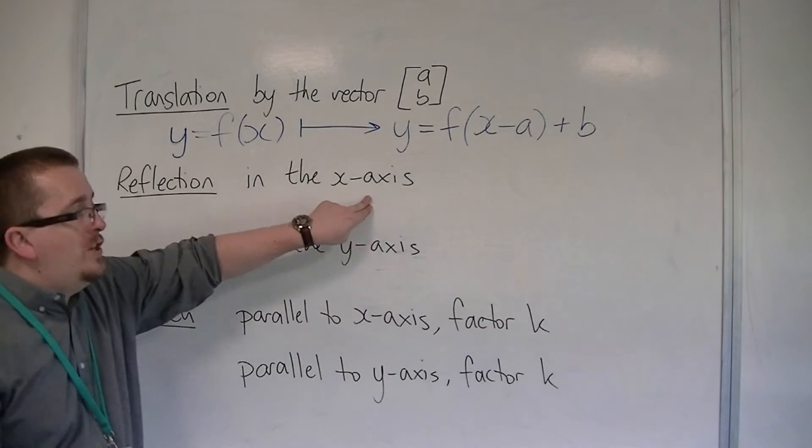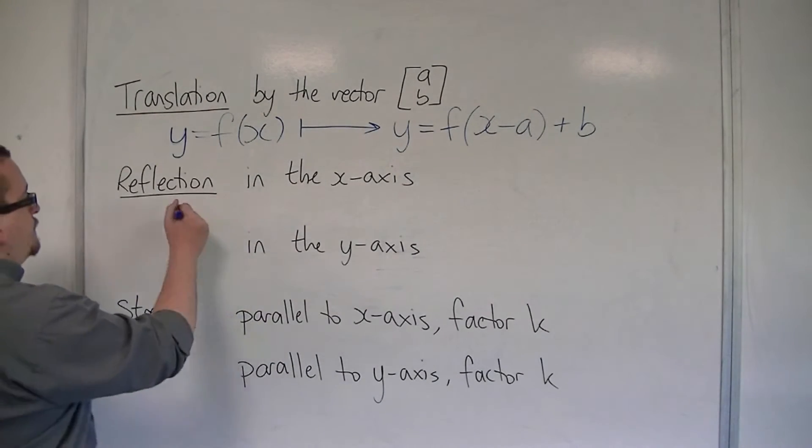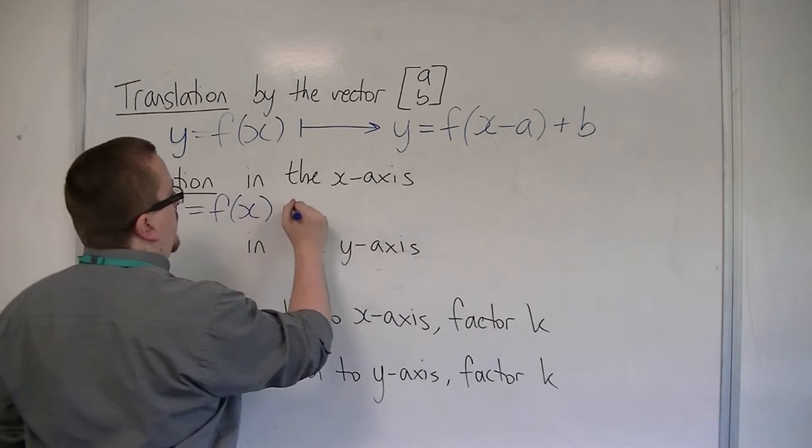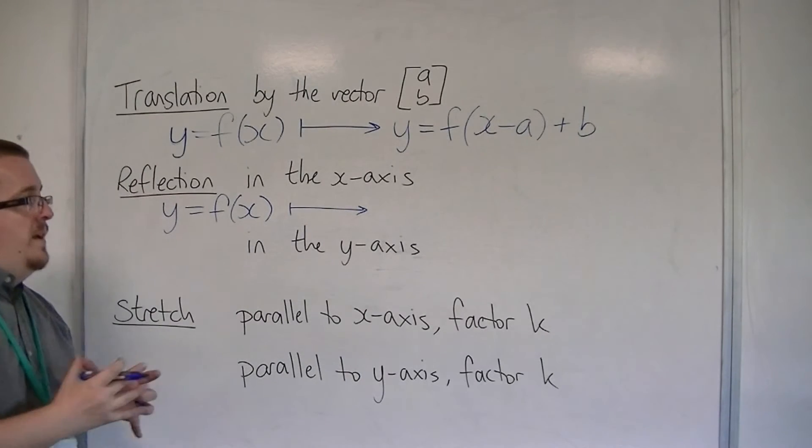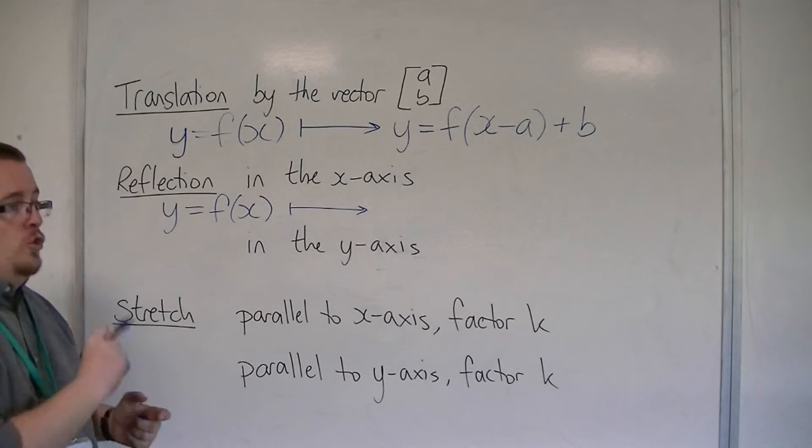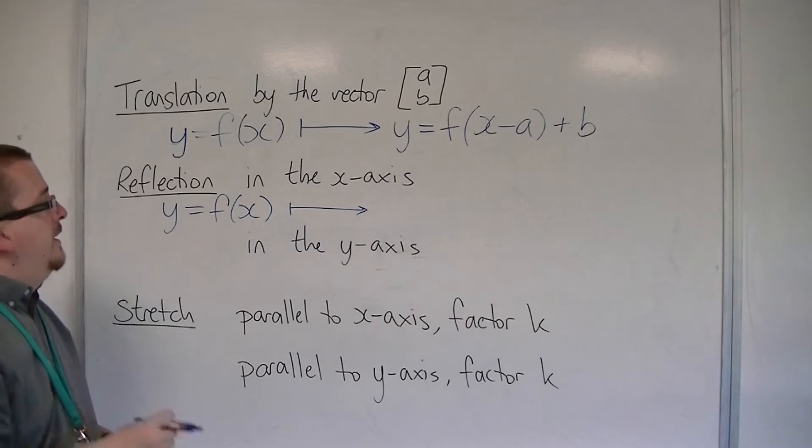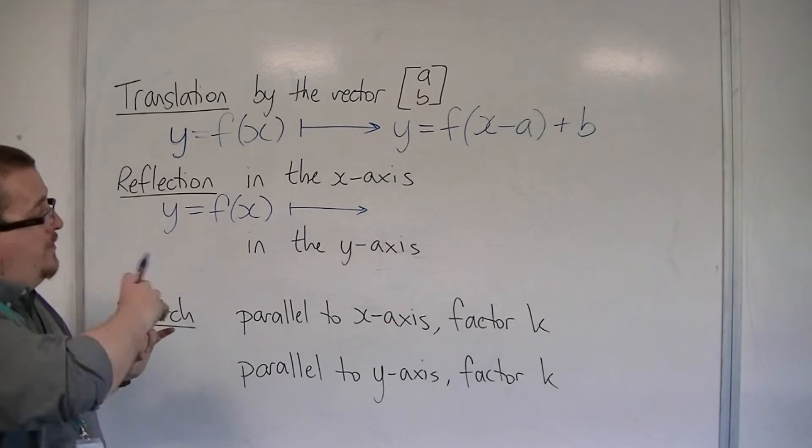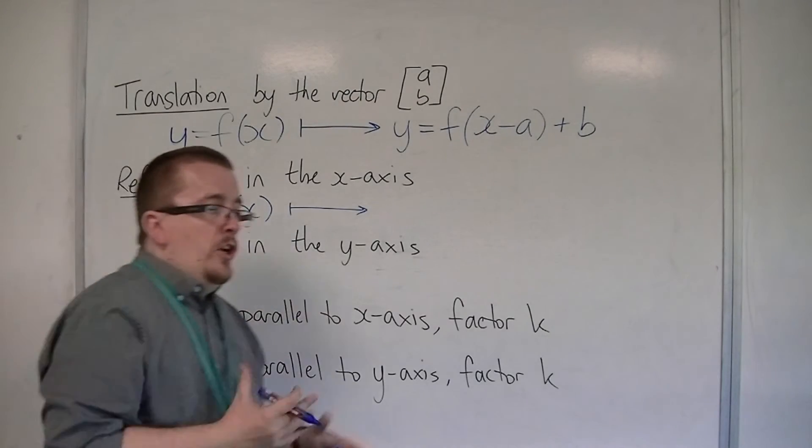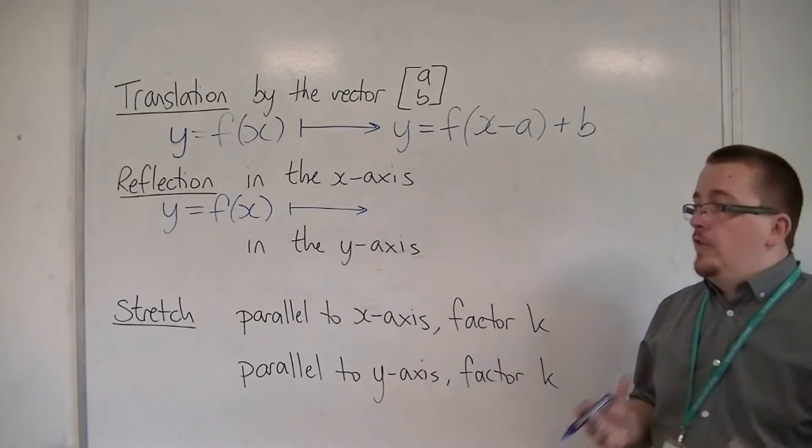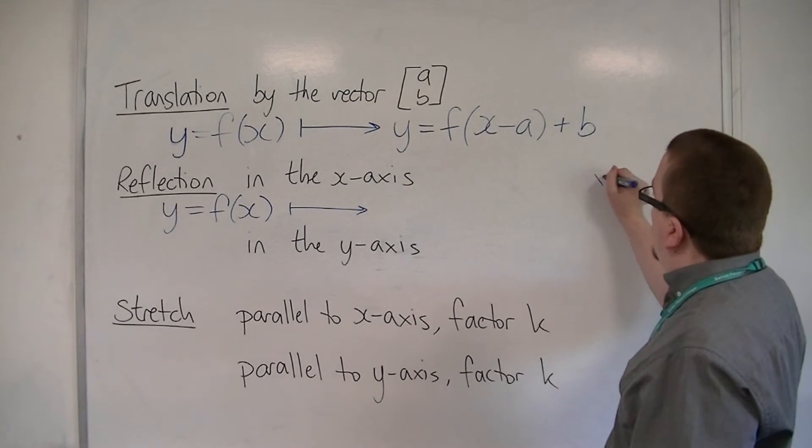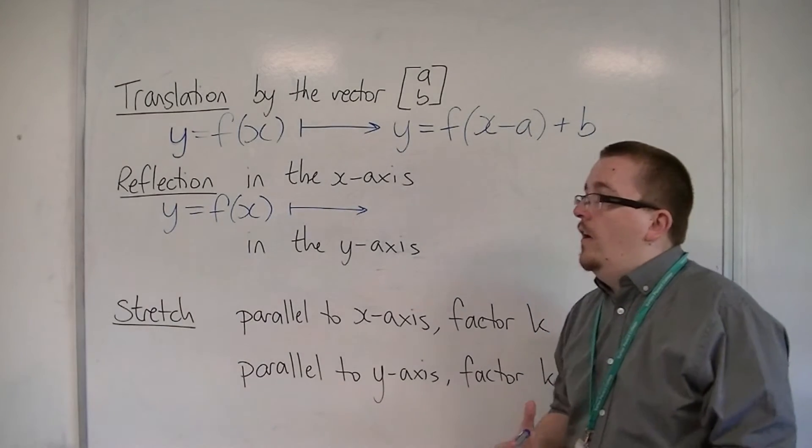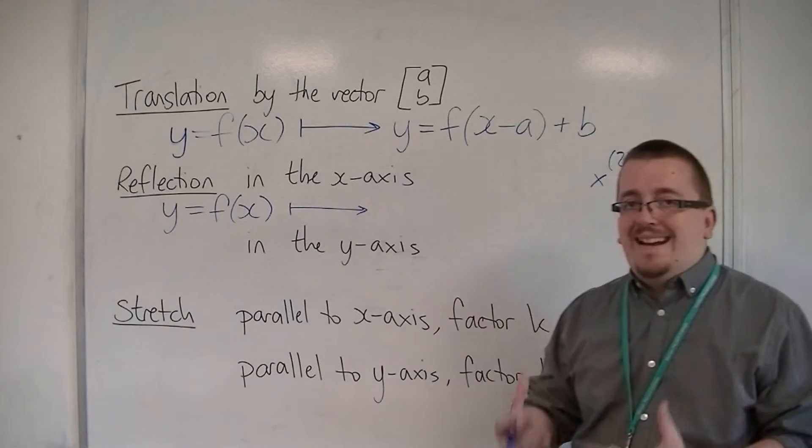For a reflection in the x-axis, if you're starting off with y equals f of x, to determine where the minus sign—and you should remember there is a minus sign involved—is appearing, in front of the x or in front of the f of x, just consider a pair of coordinates. So if I consider the coordinates (2, 3), and then I want to reflect in the x-axis,